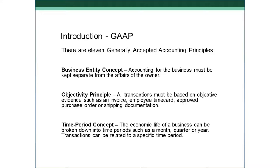The second principle is the Objectivity Principle. This one states that every transaction must be supported by objective evidence — some type of formal documentation that supports the amount, the date, and the quantity of the transaction. Things like invoices: when I buy a good, it is supported by the invoice and the receipt that I got when I bought the goods. For an employee to be paid, they must have some type of employee timekeeping, such as a time card or a time clock. That is very good evidence for recording payroll.